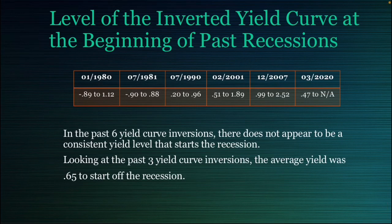Here I'm looking at the percent level of the inverted yield curve when the recessions began. You can see values of negative 0.89, negative 0.9, 0.2, 0.51, 0.99, and 0.47. There doesn't seem to be a whole lot of correlation overall, but there does seem to be correlation in the last three. If you average out those last three values of 0.51, 0.99, and 0.47, you're looking at an average of 0.65 on the inverted yield curve when the recession began.